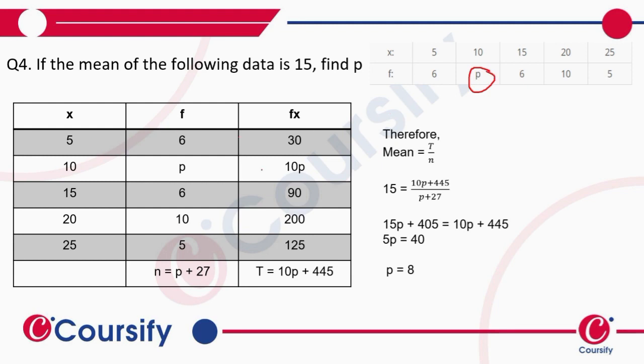So 5 into 6 is 30, then 10p, then 90, 200, and 125. Now here there is a p.